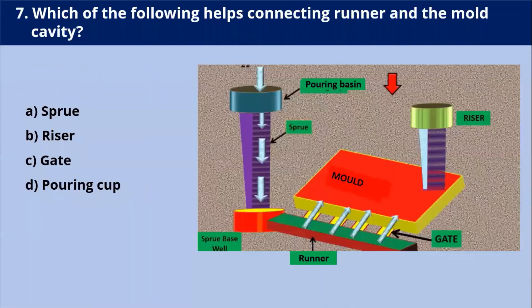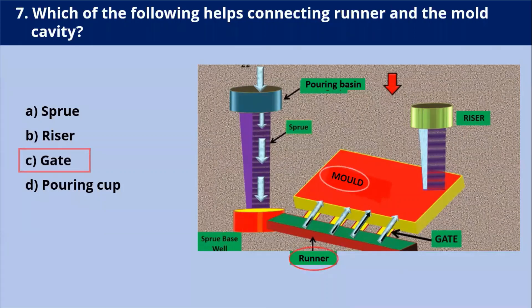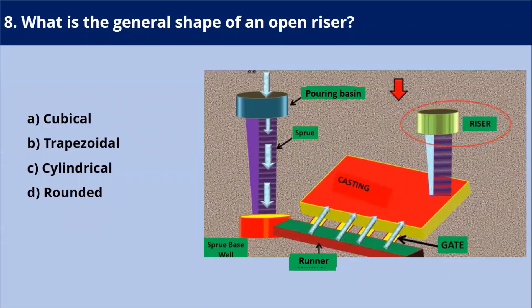Next question: which of the following helps in connecting the runner and the mold cavity? As shown in this diagram, the mold cavity and runner are connected with the help of gates. Our answer is C — gates. There may be one gate or multiple gates.